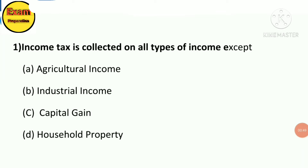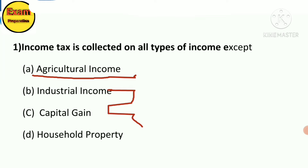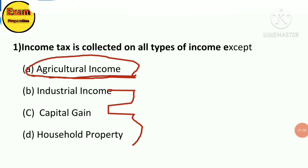The answer is: Income tax is collected on all types of income except agriculture income. It collects on all types of income, but where agriculture income is concerned, no tax is applicable.